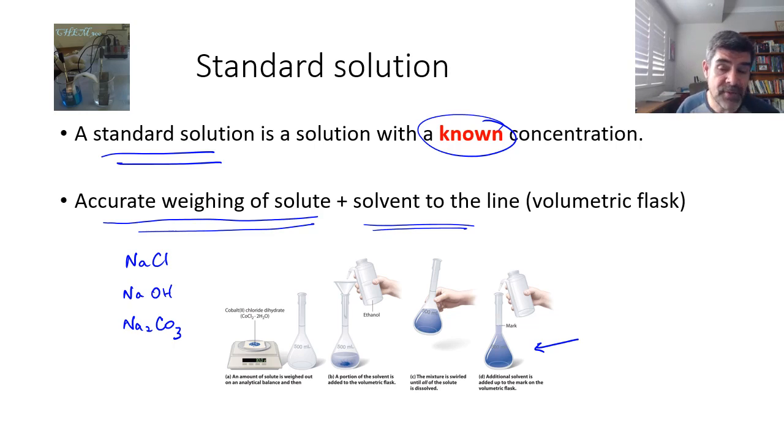This is a slightly different type of solution. You'll notice that it's a different kind of solute. This is cobalt chloride dihydrate and it's being dissolved in ethanol. So you can see that the solvent here is ethanol. But the method is always the same.